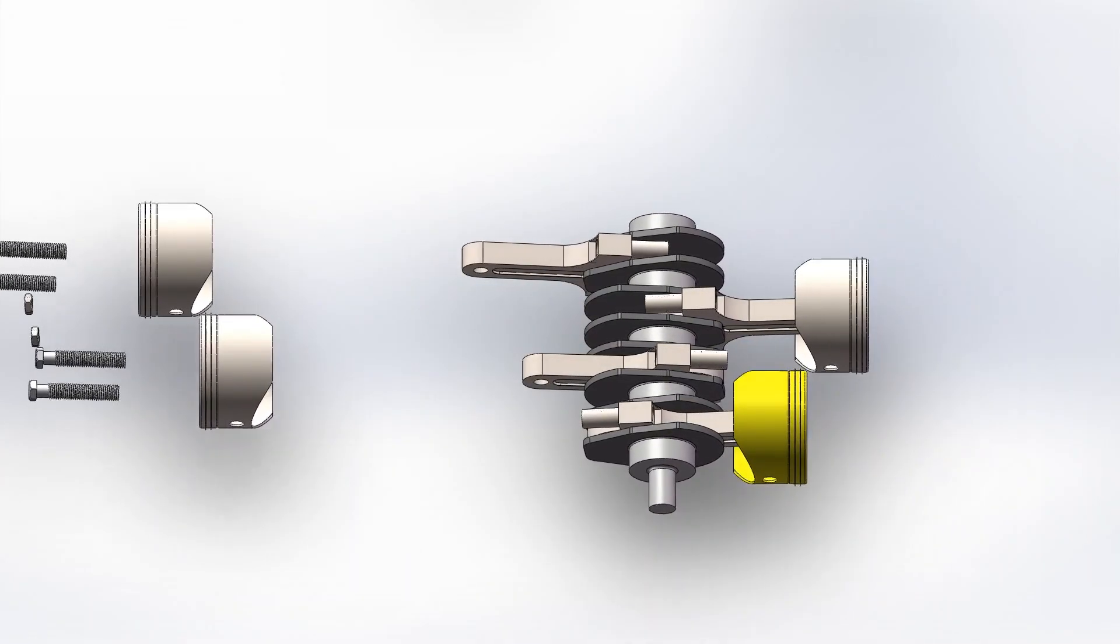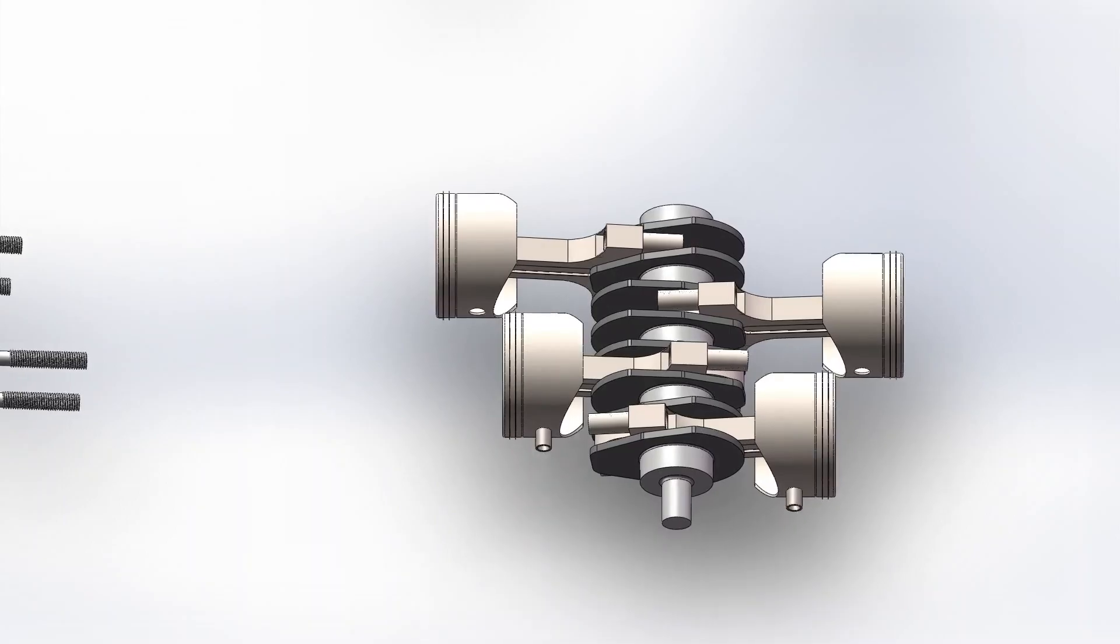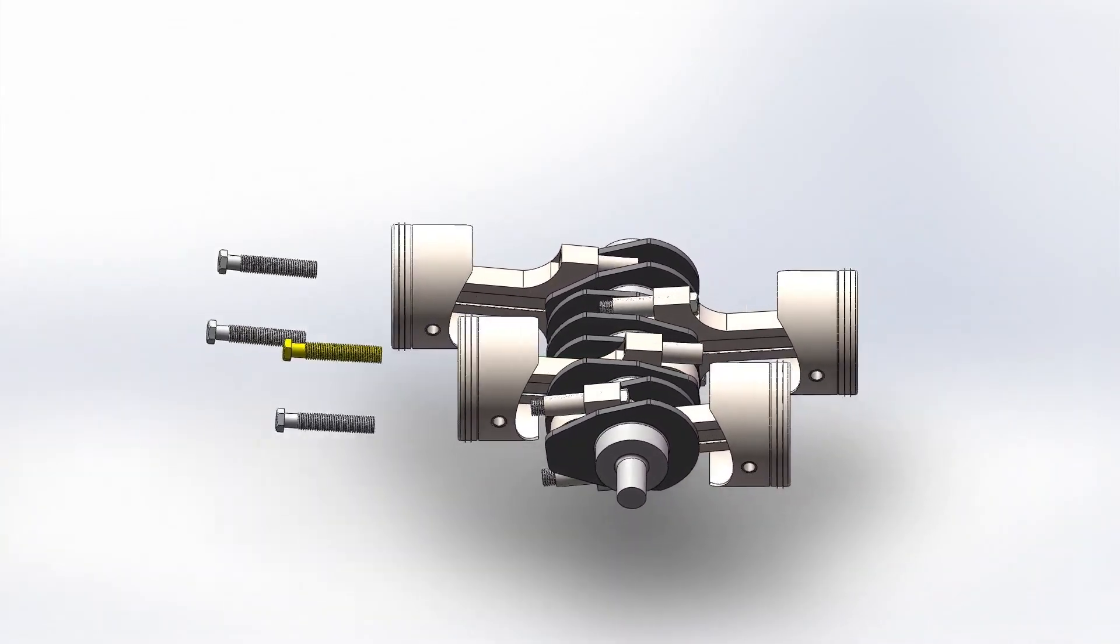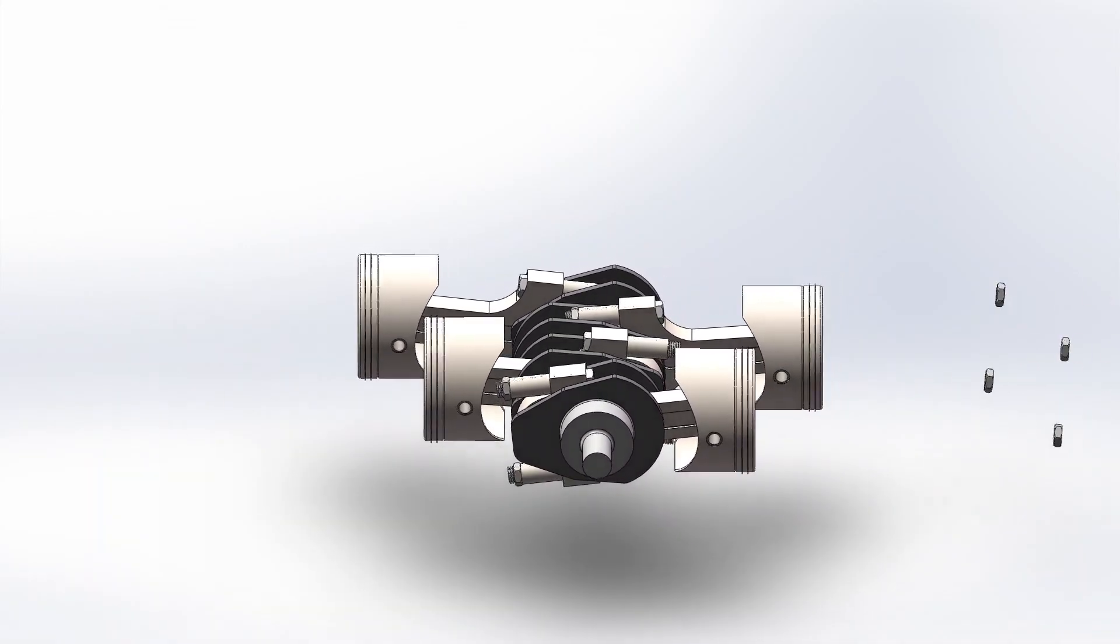These are the piston heads, which make the combustion process of oxygen and fuel possible in the combustion chamber. These piston heads are attached to the connecting rods with the piston pins. Both the connecting rod and its bottom part are held together by nuts and bolts.